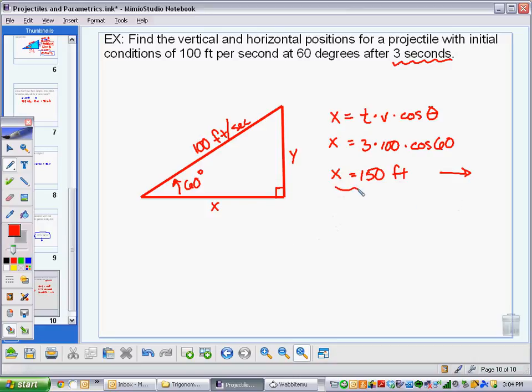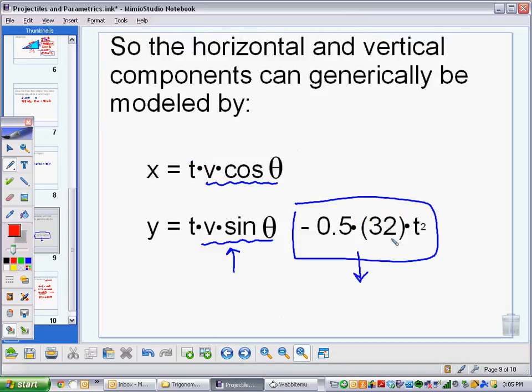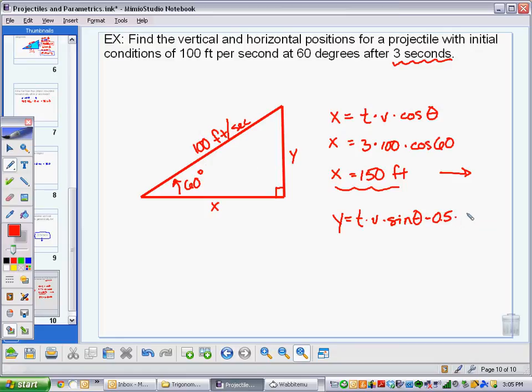How about vertically? So y is equal to this equation got a little bit more complex. It's t times v times the sine of the angle minus, here's that gravity part, 0.5. And we've got 32 times t squared. Times 32. And that 32 is actually feet per second squared, the units on there. T squared.